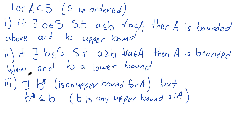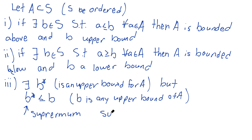Then we'll call this the supremum, also known as the least upper bound. Sometimes we'll use the notation 'sup', abbreviating supremum. We would say that the supremum of A is this B star.